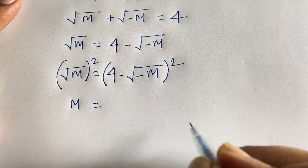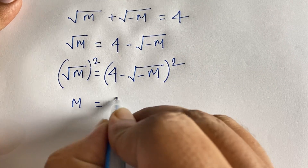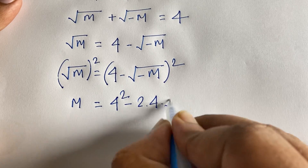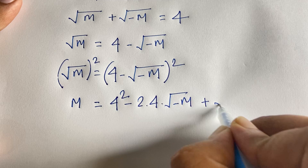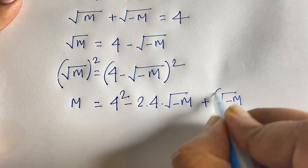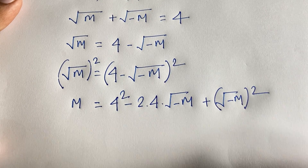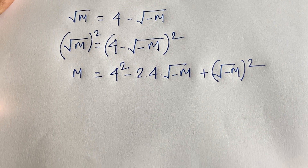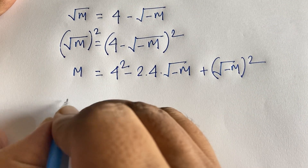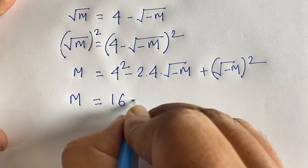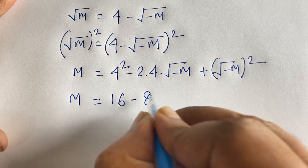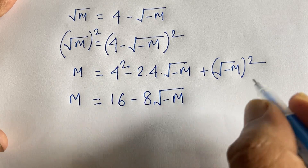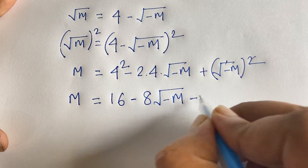Expanding: m = 4² minus 2×4×√(-m) plus (√(-m))². This gives m = 16 minus 8√(-m) plus (-m), since the square root cancels in the last term to give -m.